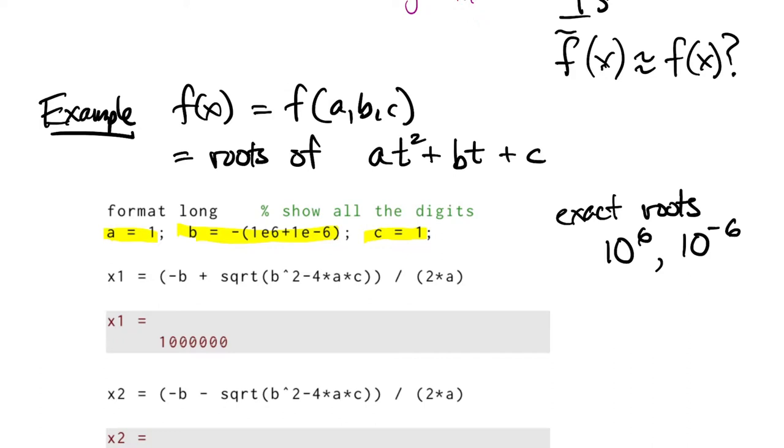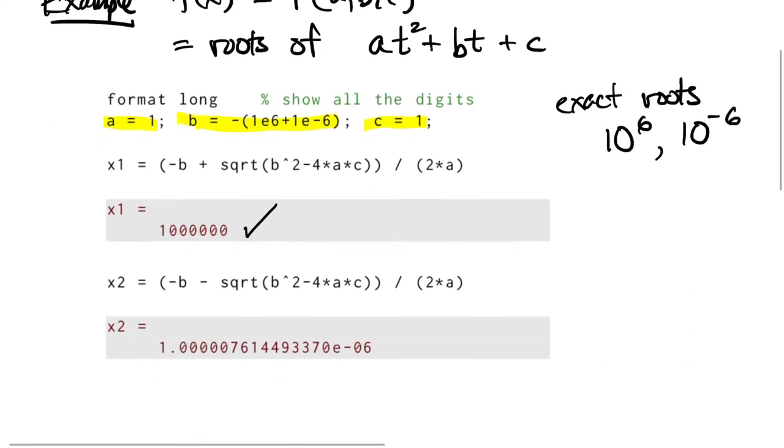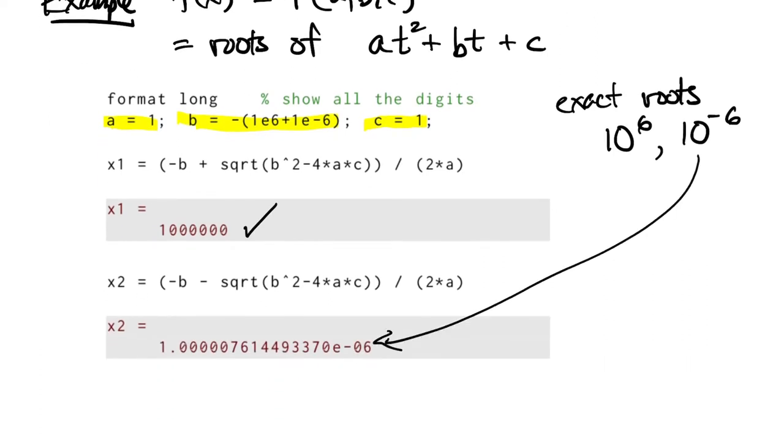Our algorithm will be to do floating point arithmetic for the quadratic formula. The larger root we get exactly right, 10 to the sixth. But you'll notice that the smaller root only has about five or six accurate digits in it.